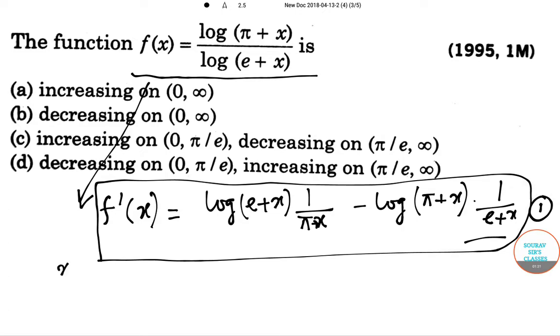So, when x is greater than 0, then we can say pi plus x is also greater than e plus x. Let us name it equation 2.